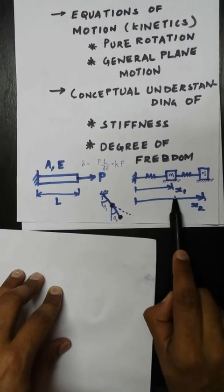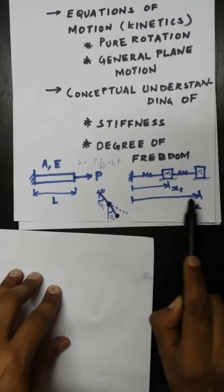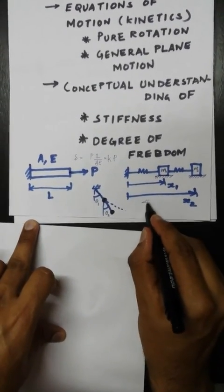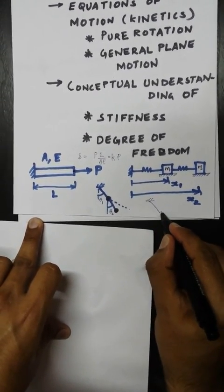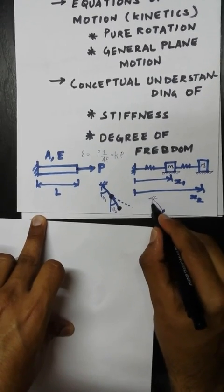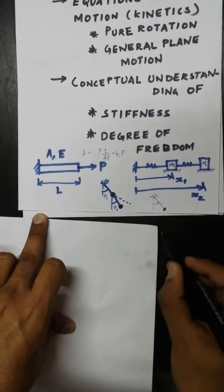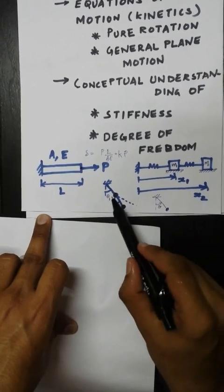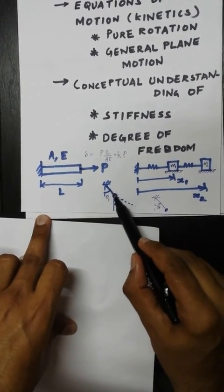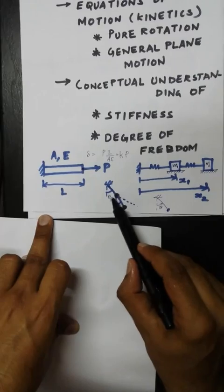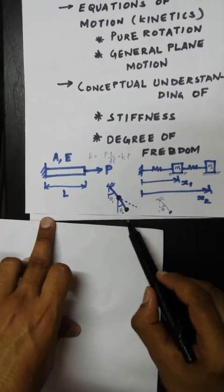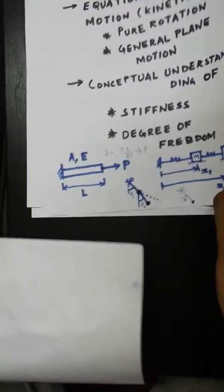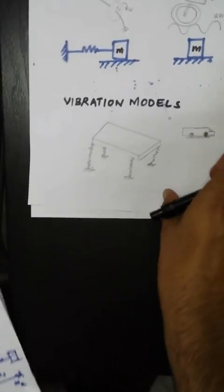Coming to a simple pendulum, if we know the length of the pendulum, we just need one single parameter to completely define the configuration of the system, say theta. But coming here, there are two bobs, so you need theta 1 as well as theta 2 to completely define the configuration of the system.